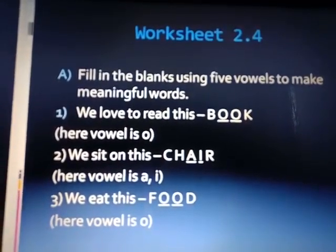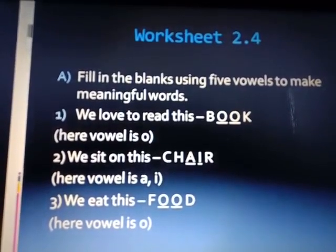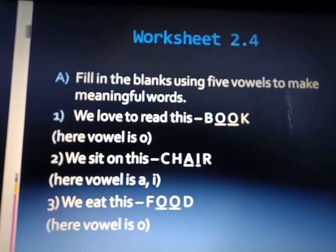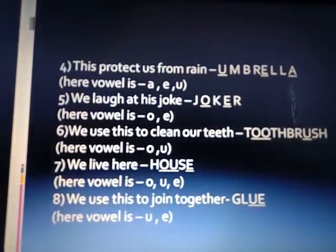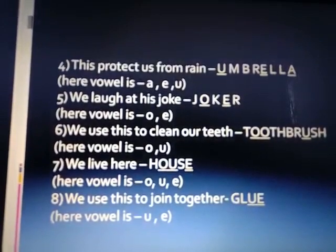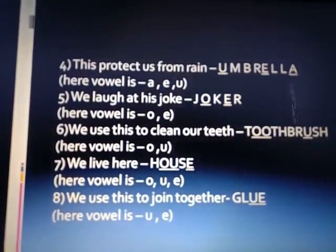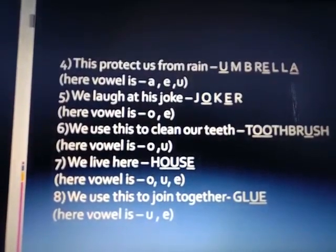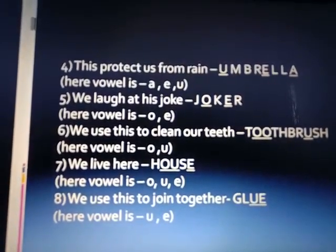We eat this — food, F-O-O-D. The vowel is O. Protect us from rain — umbrella, U-M-B-R-E-L-L-A. The vowels are A, E, U. We laugh at his joke — joker, J-O-K-E-R. The vowels are O and E.